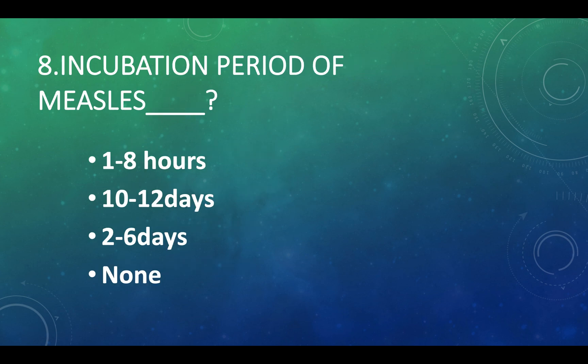Incubation period of measles: Option A — 1 to 8 hours, Option B — 10 to 12 days, Option C — 2 to 6 days, Option D — none of these. Answer: Option B, 10 to 12 days.